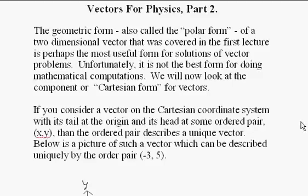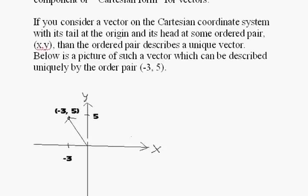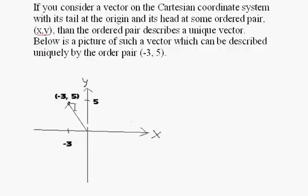Below is a picture of such a vector which can be described uniquely by the pair (-3, 5) on the Cartesian coordinate system. Here's the point (3, 5) and the tail is always at the origin, and that creates a unique vector with just one point.